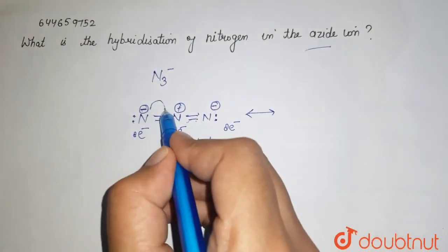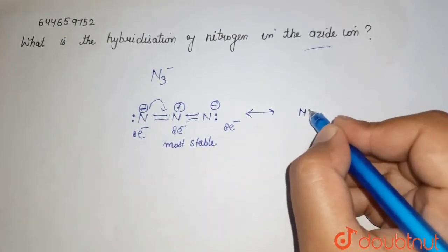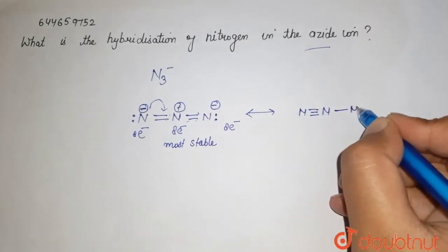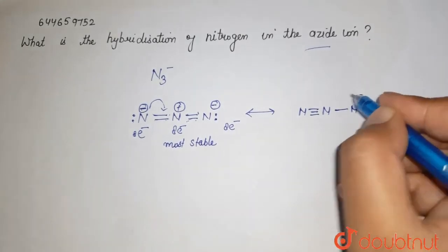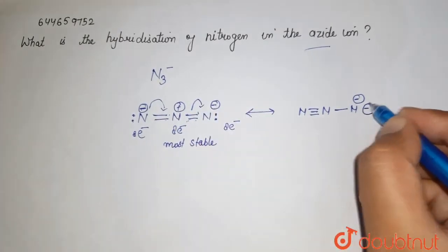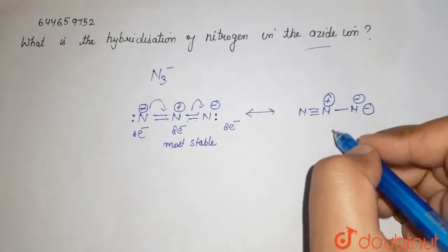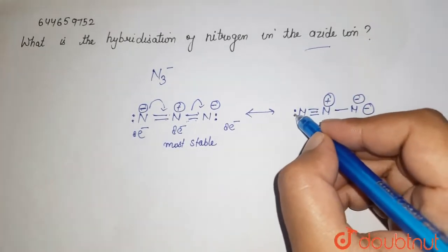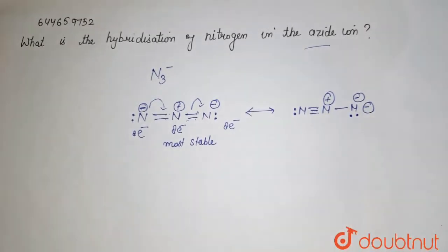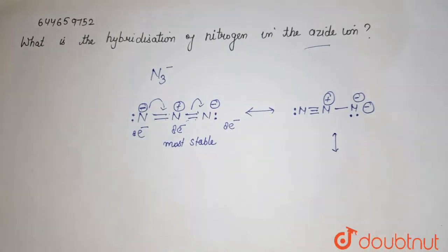If I want to draw the resonating structures: the negative charge comes over here, then nitrogen forms a bond like this, and here we get one negative charge. This bond goes over here, so it gets two negative charges over here, and here we have a positive charge. We are left with the lone pairs. The structure forms with a lone pair like this.